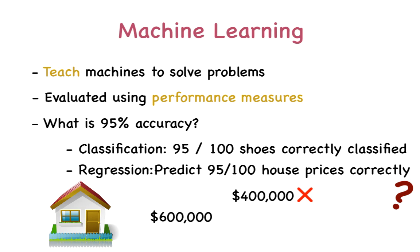But what if the predicted price was $599,999? Technically, the predicted value still doesn't match the actual price, and hence is also considered incorrect. But the latter prediction is certainly more correct than the former. So it makes sense to evaluate such regression type problems differently.